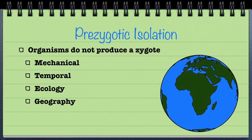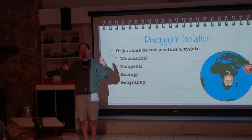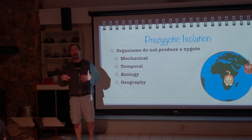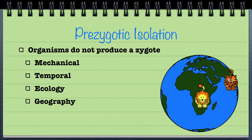Geographical isolation is a next step out where now we have a geographical boundary. Lions and tigers naturally in the wild will not meet with each other, and they cannot have offspring because they will never come in contact in such a way that a lion and a tiger would actually mate. So they are geographically isolated from each other.